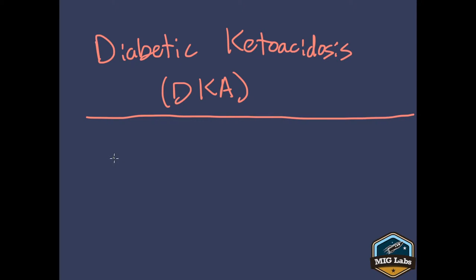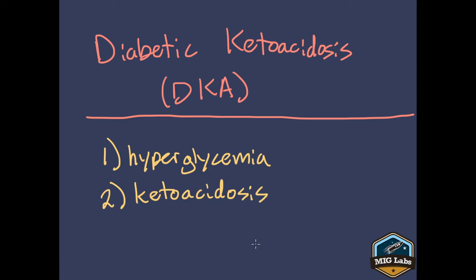Diabetic ketoacidosis, or more commonly known as DKA. So DKA is a disorder that's characterized primarily by two conditions. The first one is hyperglycemia, having a high blood sugar. And the second condition is what we call ketoacidosis. Ketoacidosis is when you have metabolic acidosis, so your blood pH is lower than normal, and it's caused by ketone bodies. The reason we care about DKA is because it is a life-threatening condition.